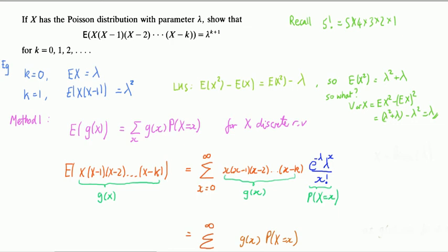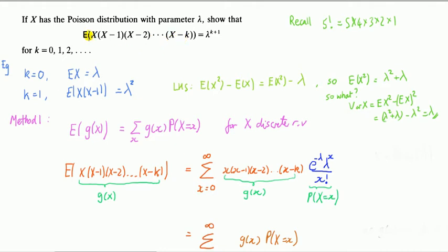This question is about factorial moments. Recall first of all that as an example, 5 factorial is equal to that number multiplied by all the integer values less than that number up to 1. Now look at this expression here: the mean of x times x minus 1 times x minus 2, all the way to x minus k. Such an expression is called a factorial moment.